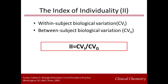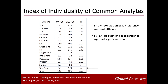The index of individuality calculates the ratio of total within-subject variation to between-subject biological variation; most often it is simplified to the ratio of within-subject variation to between-subject variation. This table shows the index of individuality for common analytes. Studies have shown that if the index of individuality is less than 0.6, population-based reference ranges are of little use. If the index of individuality is above 1.4, population-based reference ranges are of significant use. For uric acid, the index is 0.5, indicating that the population-based reference range would not be useful as a homeostatic reference range for individuals — as seen in our patient.